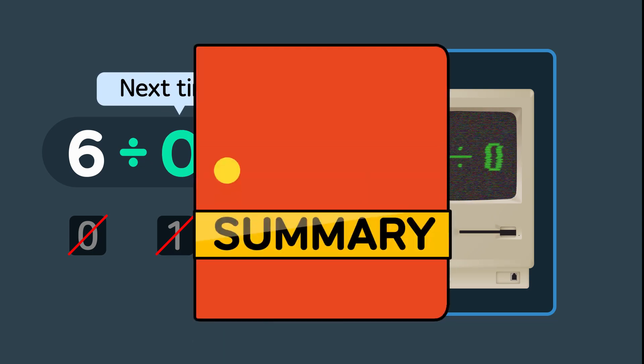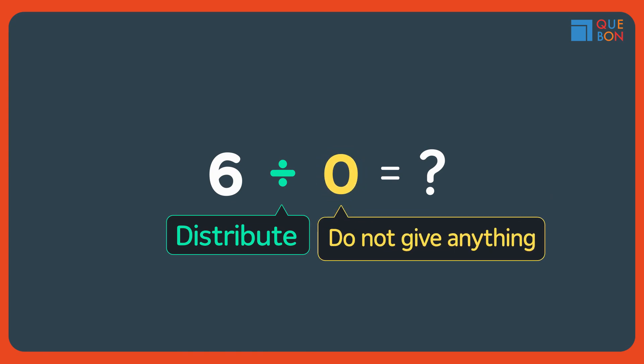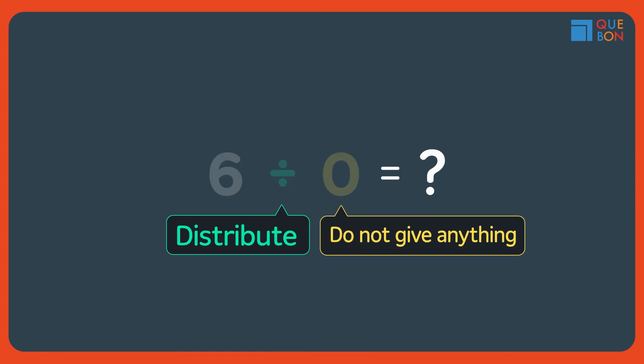Summary time. Six divided by zero. Distribute, but give nothing. After all this, you'll never forget what six divided by zero is. Right?